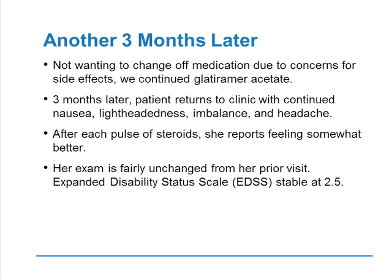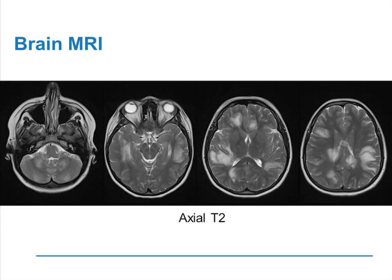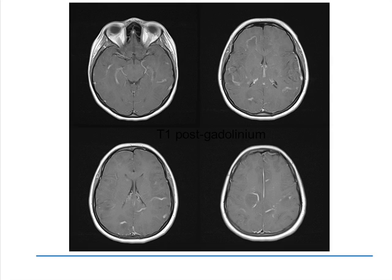She returned three months later with continued nausea, lightheadedness, imbalance, and headache. She had had a pulse of steroids with some improvement, and her exam was fairly unchanged with an EDSS of 2.5. However, the repeat brain MRI showed a much worse lesion load — T2 hyperintense lesions large and involving a great deal of her brain, many more than before. On axial T1 post-gadolinium images, many lesions demonstrated partial ring enhancement, showing that this is active and aggressive multiple sclerosis.